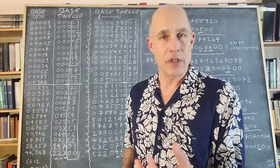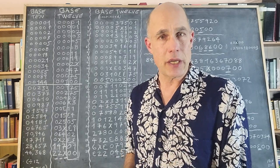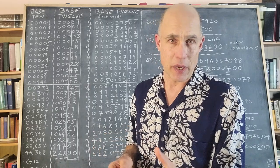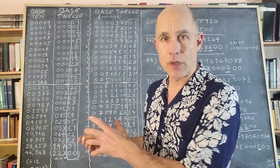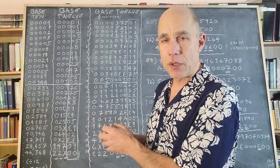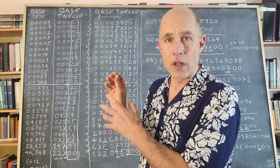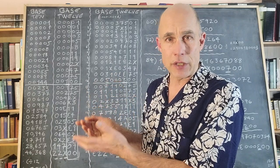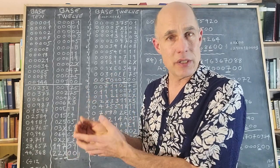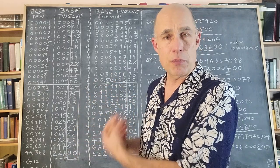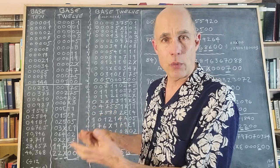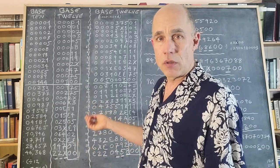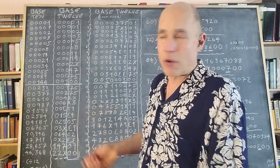I'm continuing with my series of videos on the Fibonacci sequence from a base 12 perspective. What I've done is simply converted the numbers from the Fibonacci sequence in base 10 to their base 12 equivalent, and looking at what emerges from that.